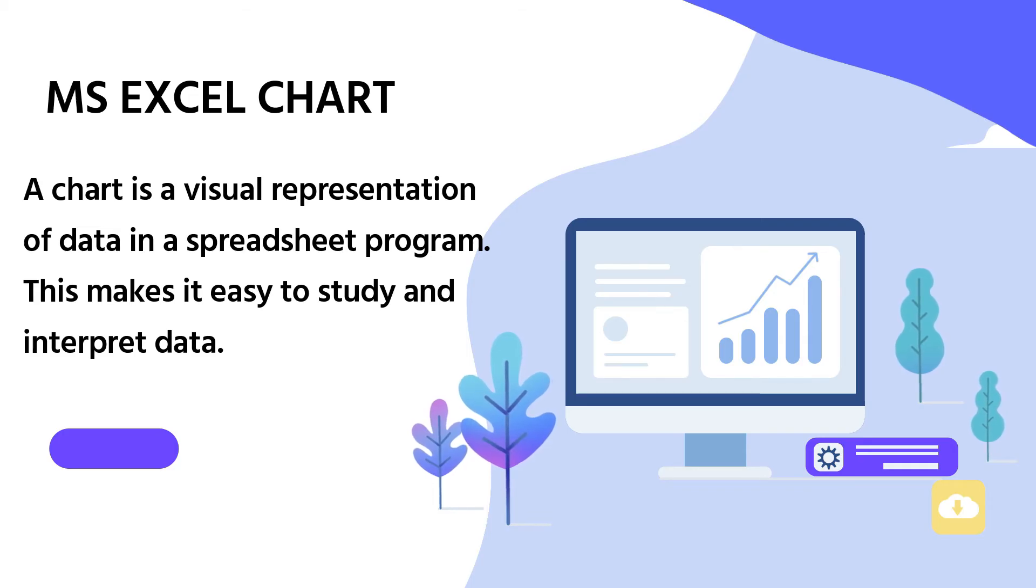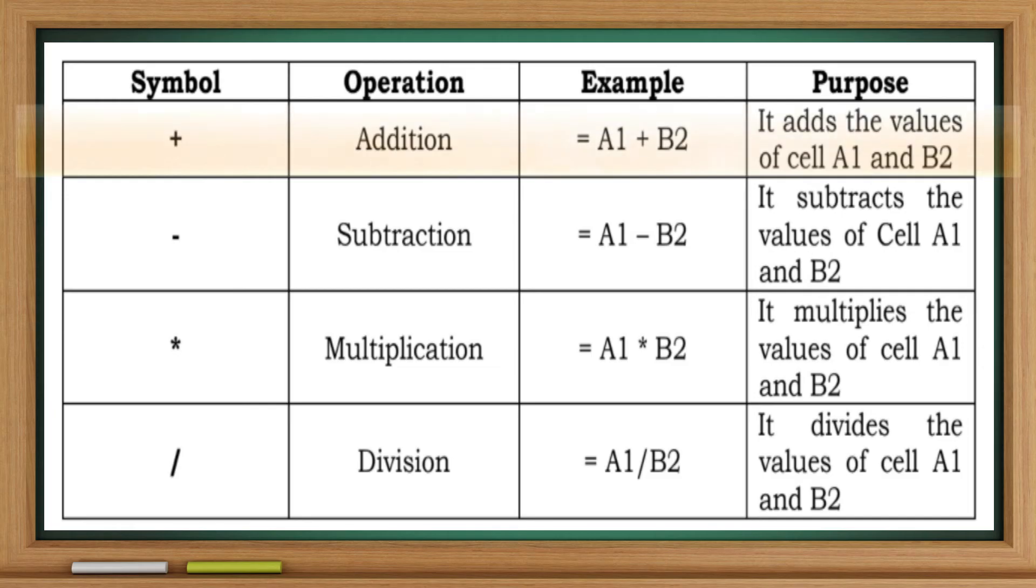Addition example: equals A1 plus B2. Purpose: It adds the values of cell A1 and B2. Subtraction: equals A1 minus B2. It subtracts the values of cell A1 and B2.